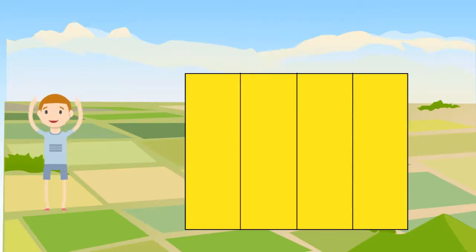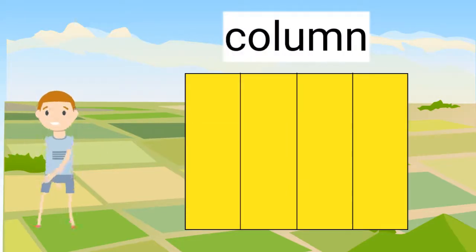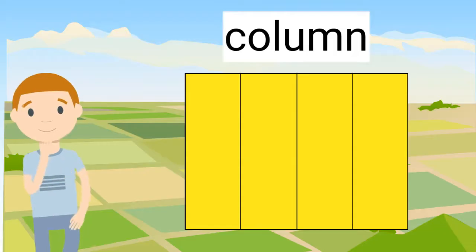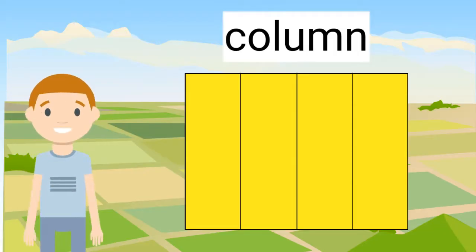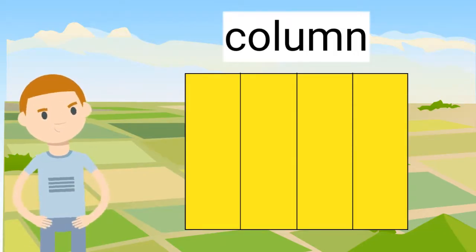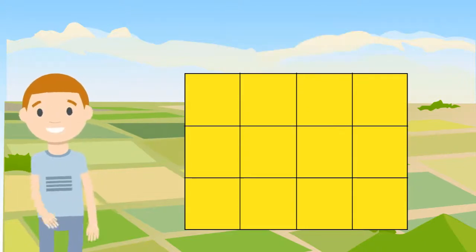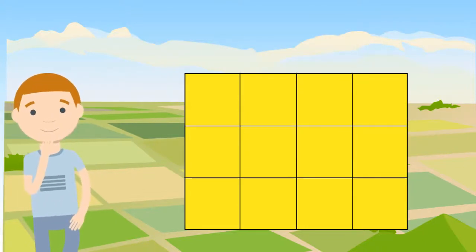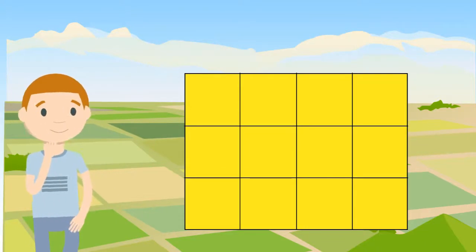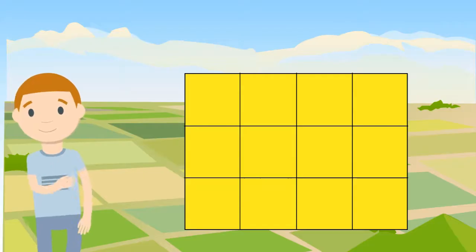Now let's divide the rectangle into columns. Can you say the word column? Columns go up and down through the rectangle. Do you see how this rectangle is now a bunch of squares?